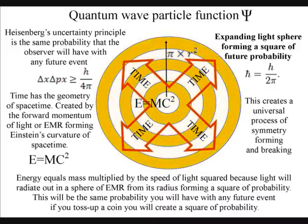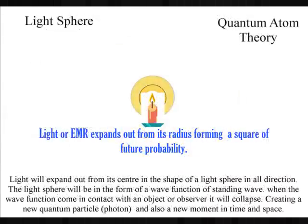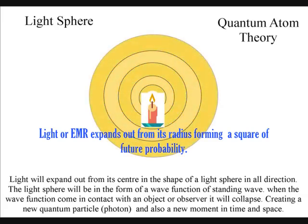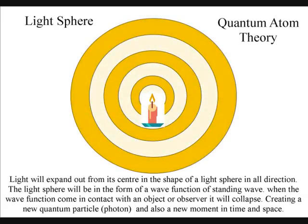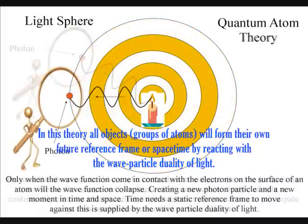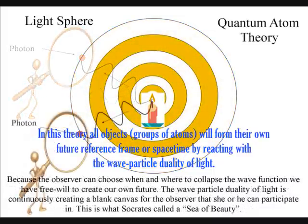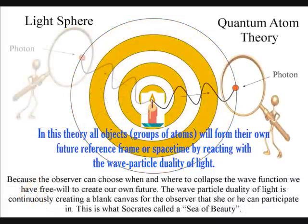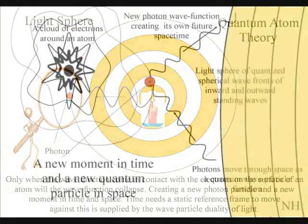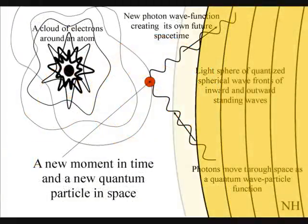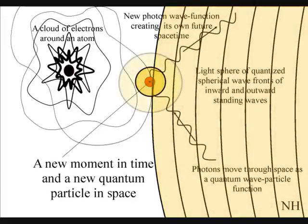We live in a dynamically evolving universe of continuous change because of the probabilistic nature of the wave-particle duality of light. Only if light waves come in contact with an object will they form new photons of quantized energy that will have a unique position in space and time. In this theory, it is the inward absorption and outward emission of electromagnetic waves that continuously form the arrow of time and the geometry of space-time.